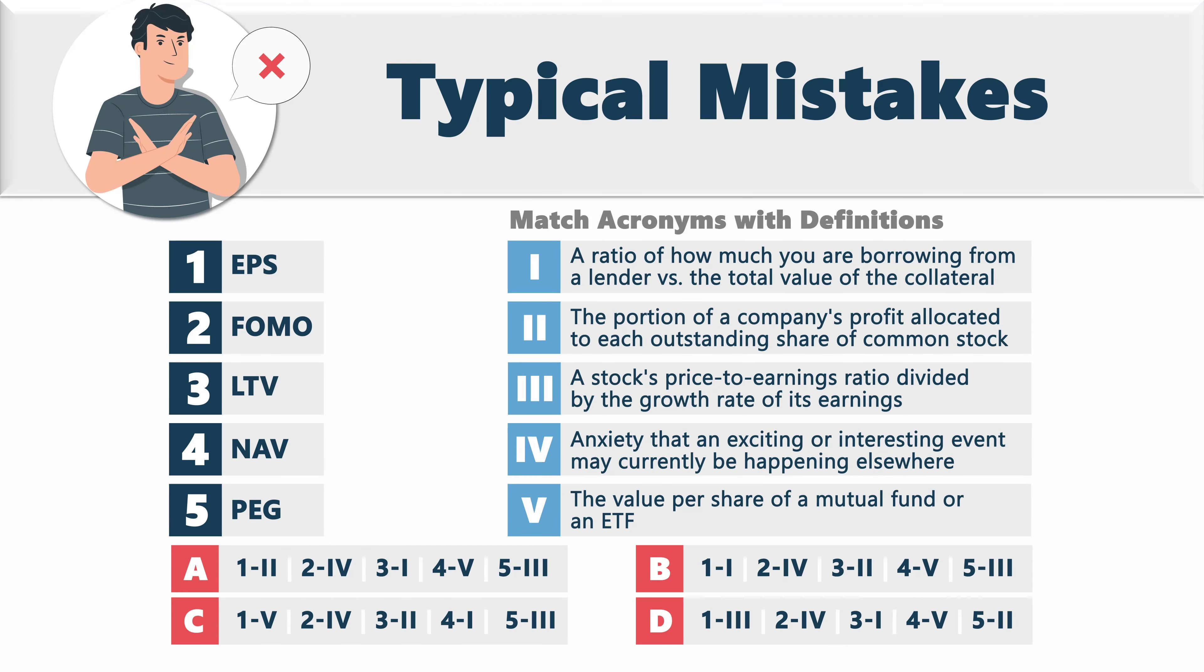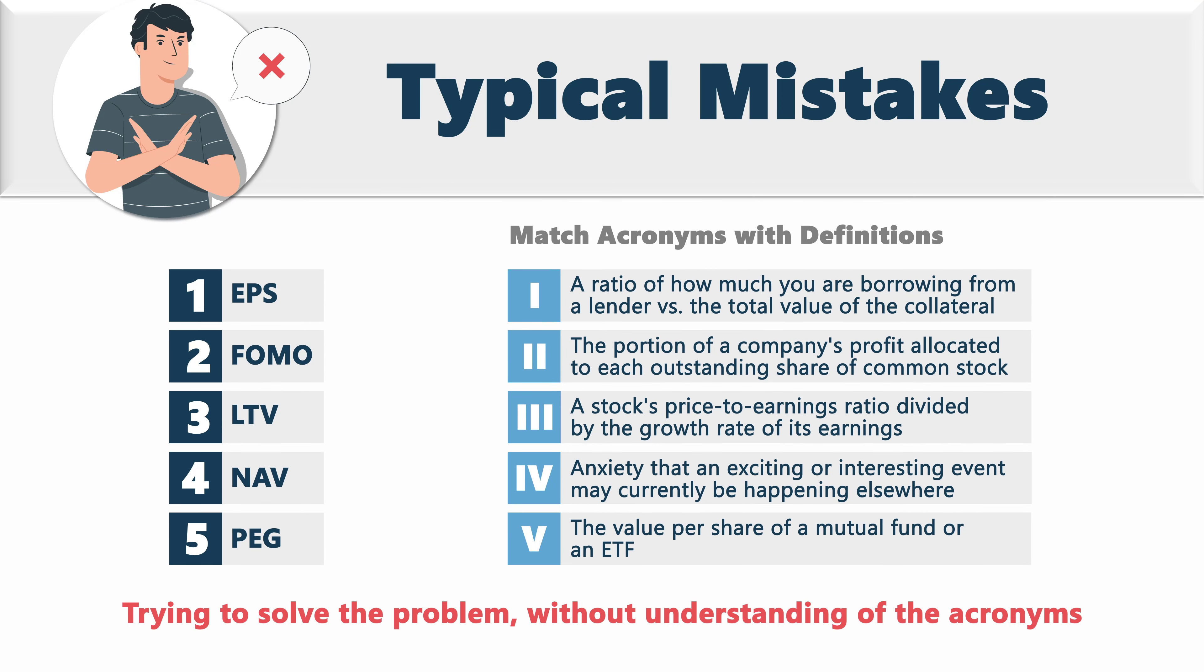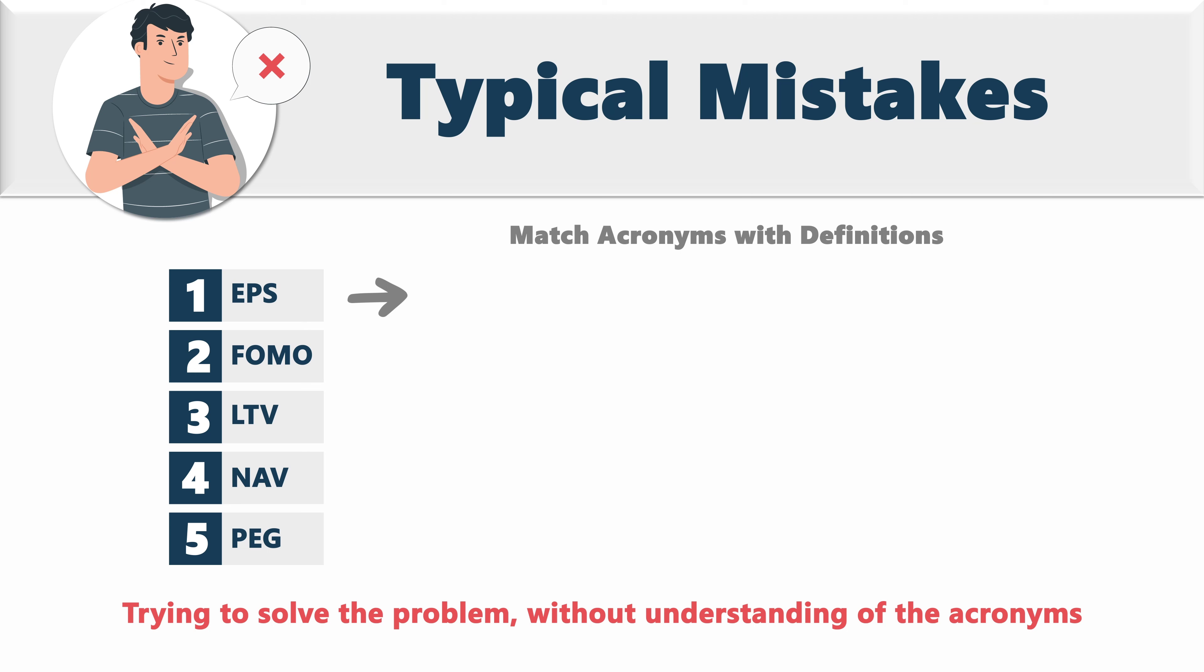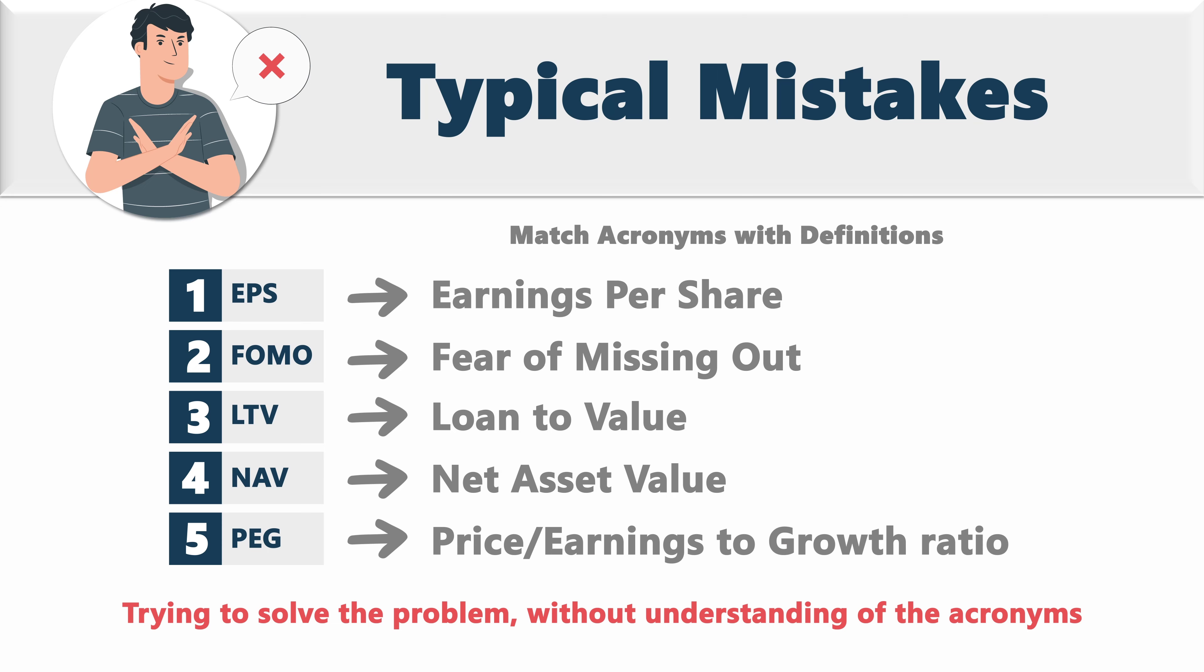Speaking about the incorrect answers, you might be curious to learn that the most typical mistake here is trying to solve the problem without understanding the acronyms. And there are five acronyms here. EPS stands for Earnings Per Share. FOMO stands for Fear of Missing Out. LTV stands for Loan to Value. NAV stands for Net Asset Value. And PEG stands for Price Earnings to Growth Ratio.